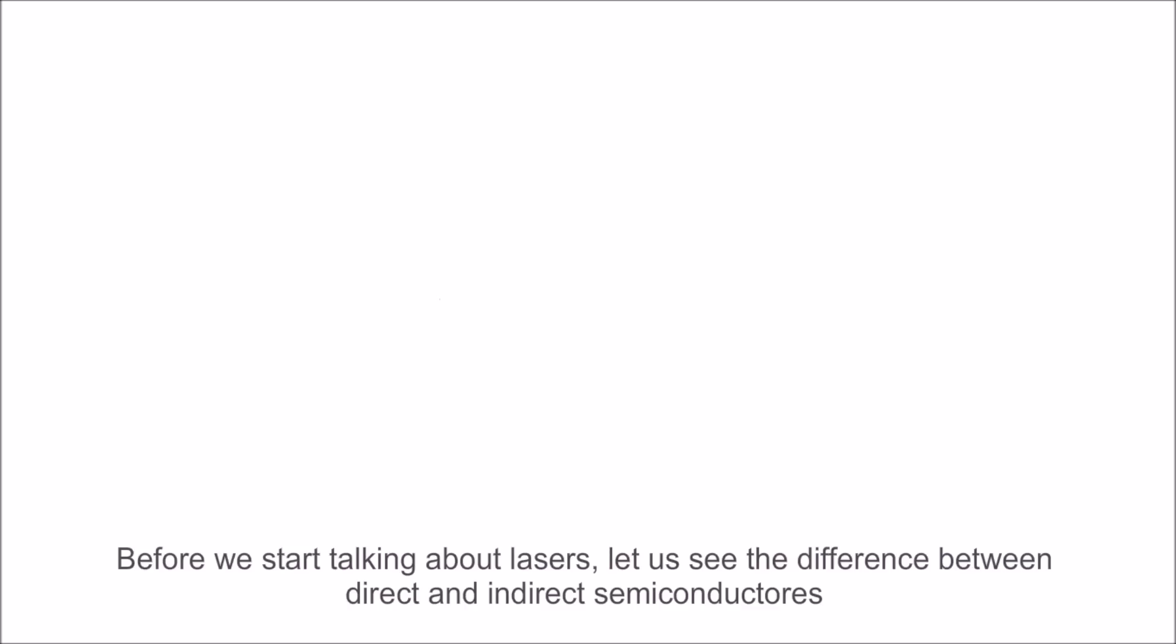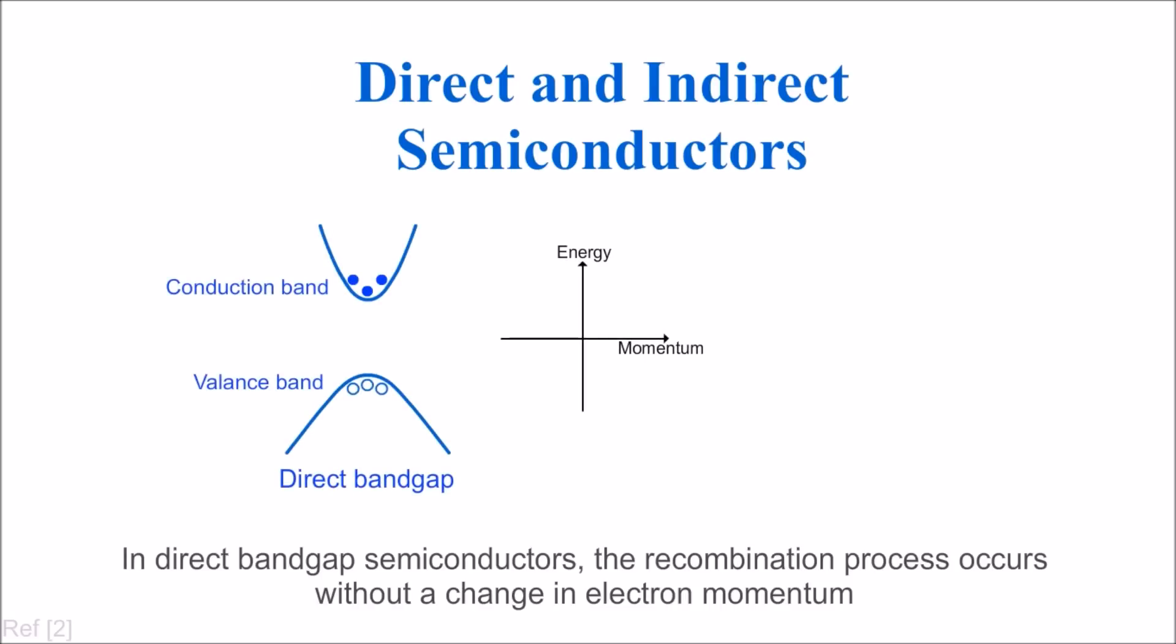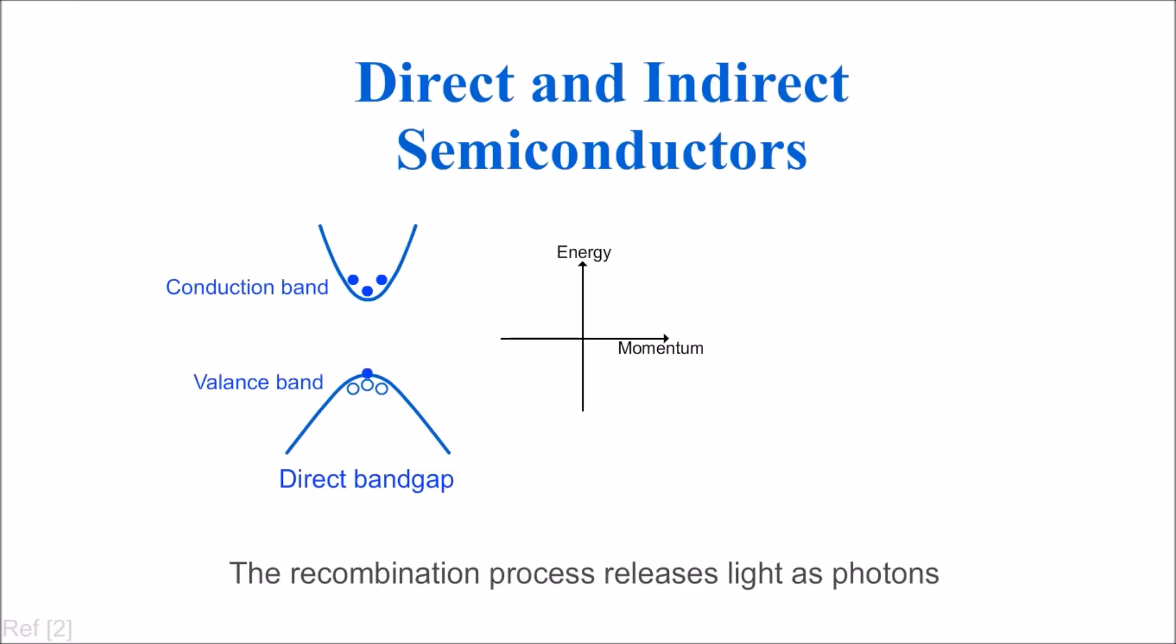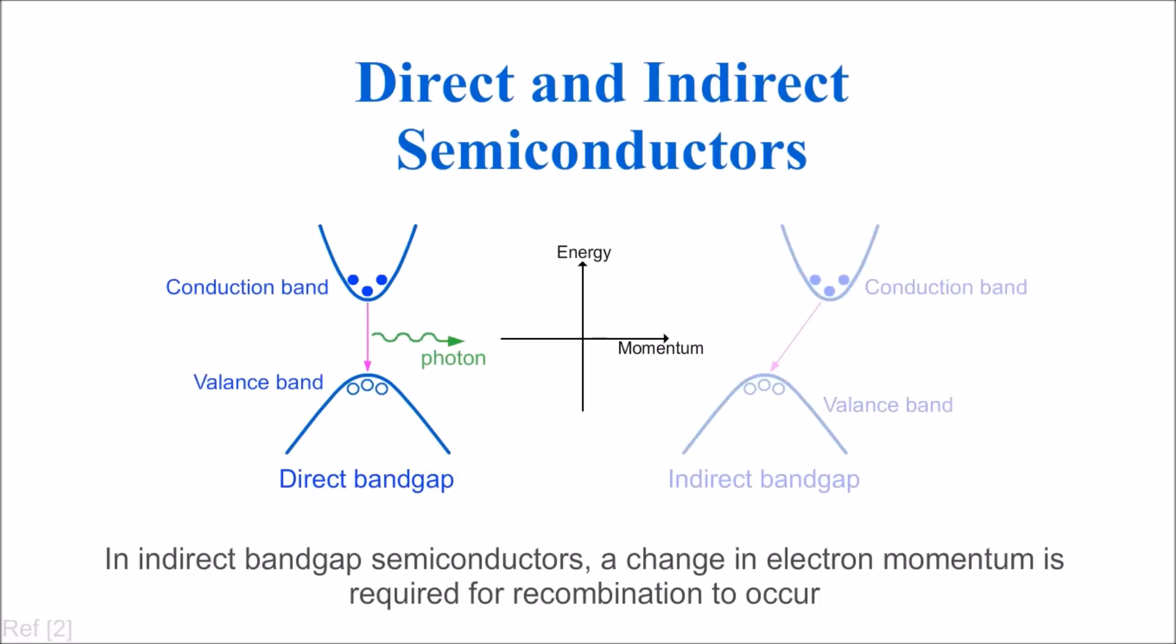Before we start talking about lasers, let us see the difference between direct and indirect semiconductors. In direct bandgap semiconductors, the recombination process occurs without a change in electron momentum. The recombination process releases light as photons.